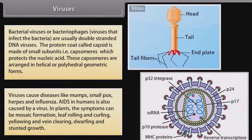In plants, the symptoms of viral infection can include mosaic formation, leaf rolling and curling, yellowing and vein clearing, and dwarfing and stunted growth.